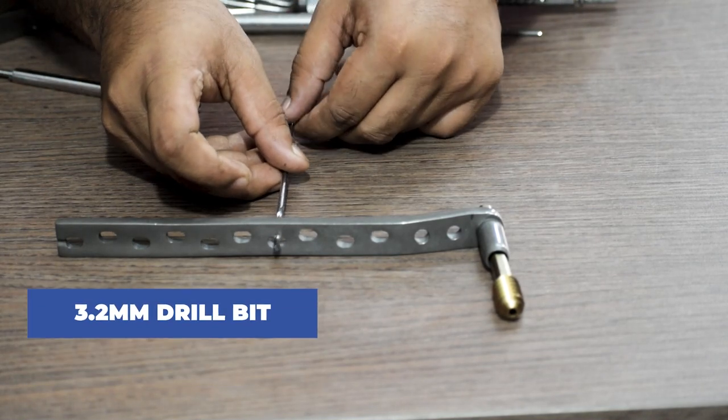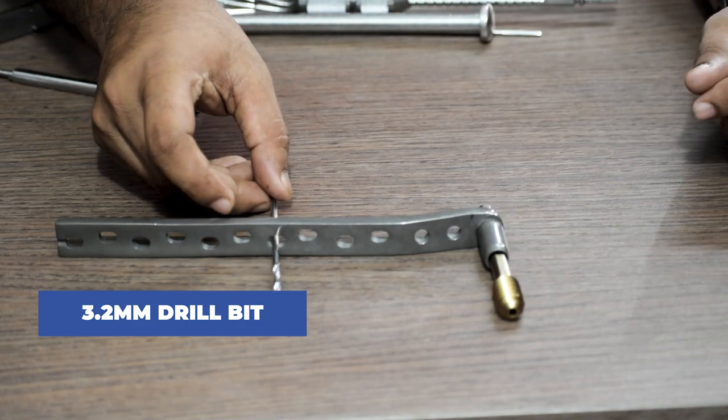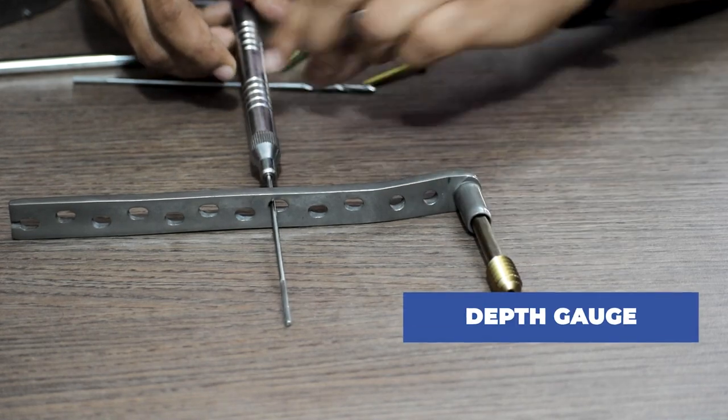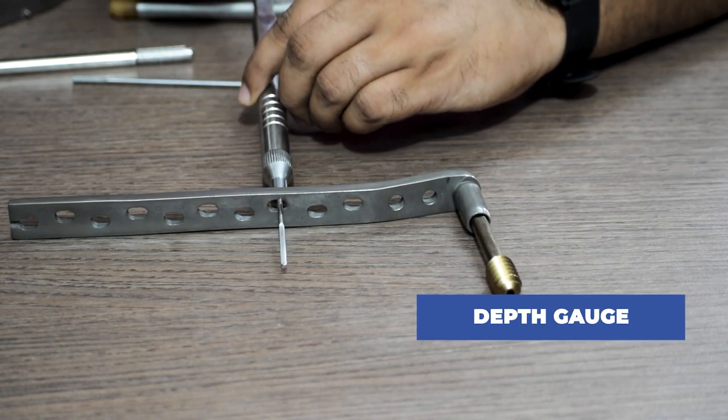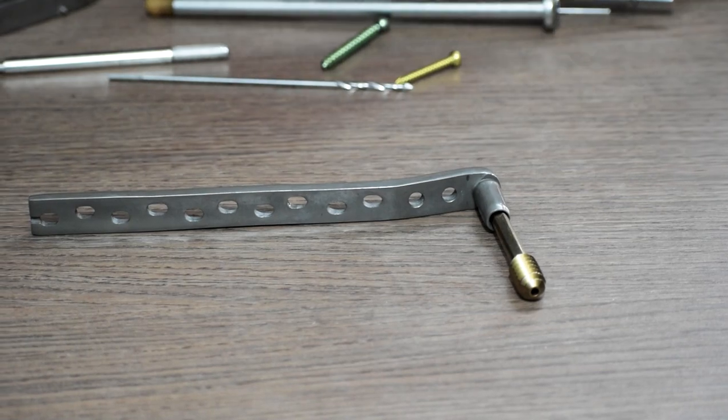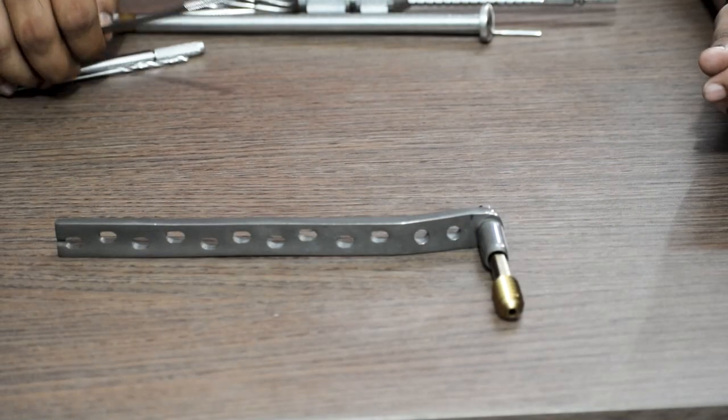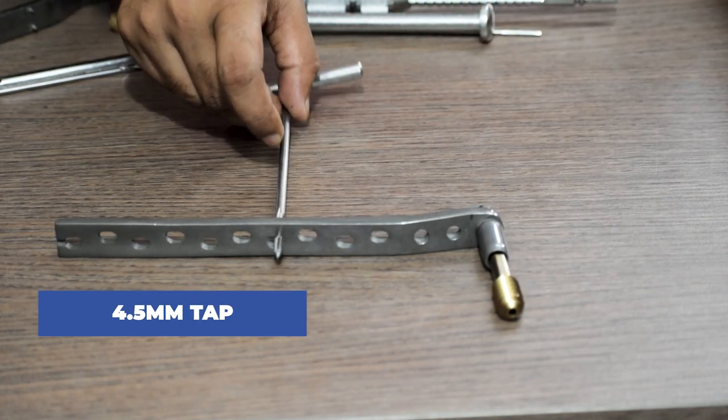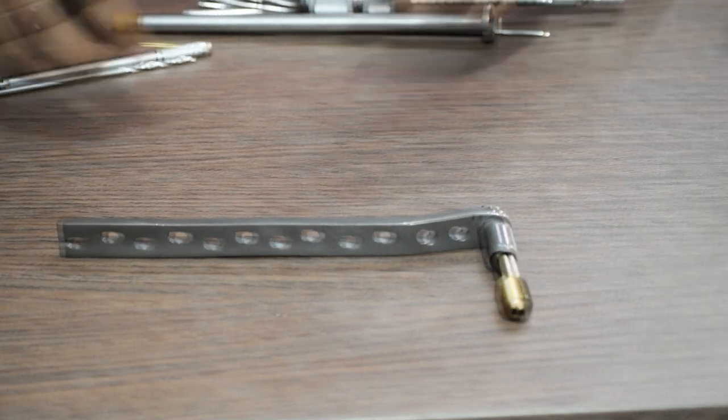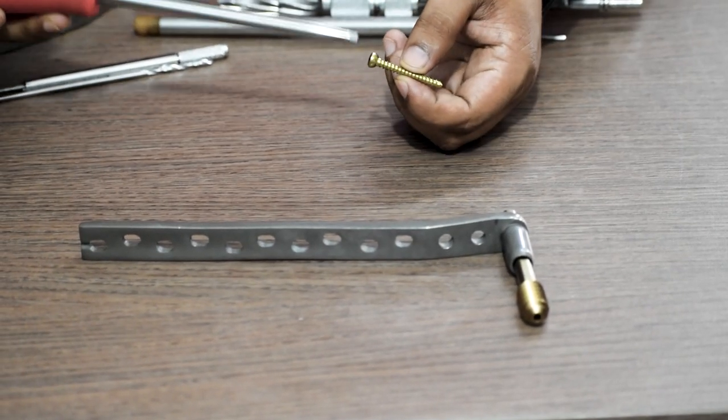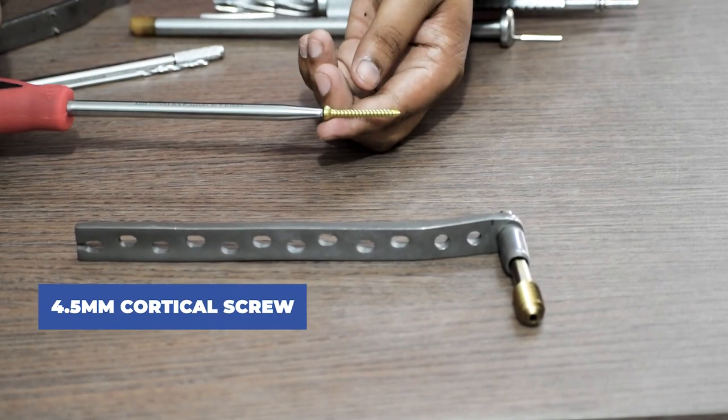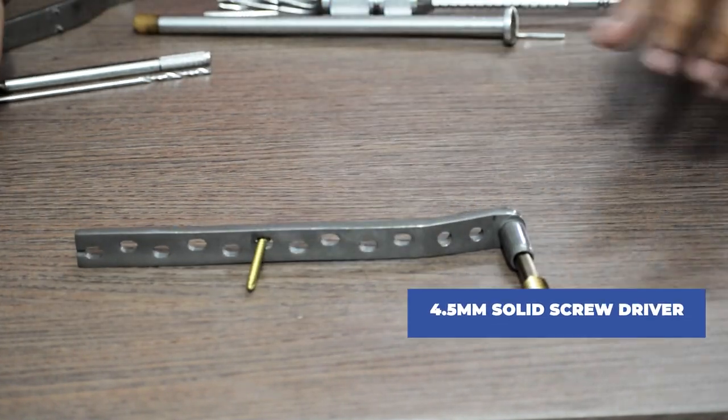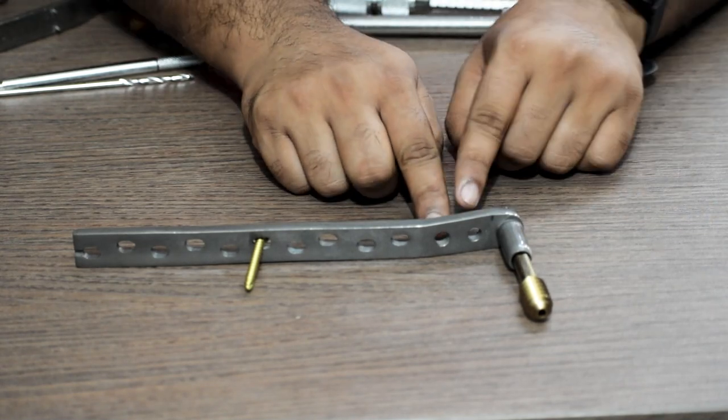Thereafter we use a 3.2 mm drill bit. Then we take the measurement with the help of the depth gauge. Then we use the 4.5 mm tap to tap through the hole. Then we take a 4.5 mm cortical screw of the measured length and with the help of a 4.5 mm solid screwdriver we fix the screw in the shaft region of the DCS plate. Now let us understand about these two holes.